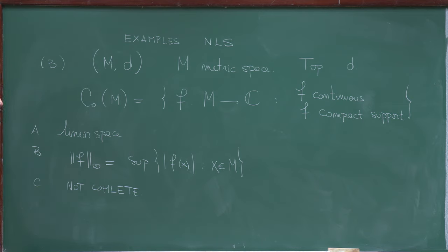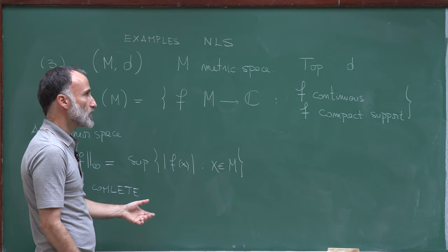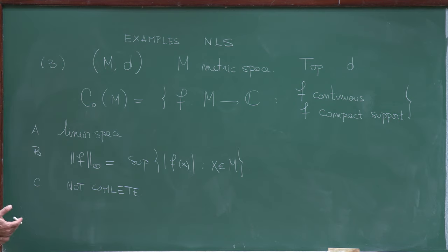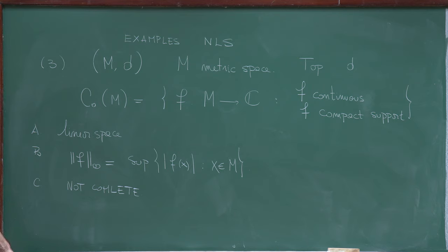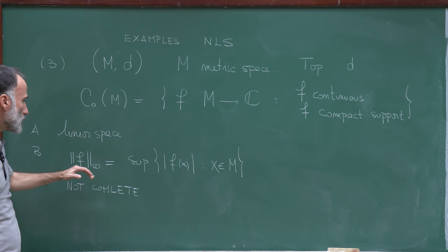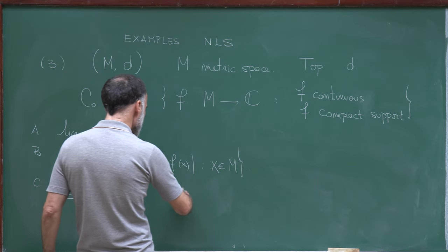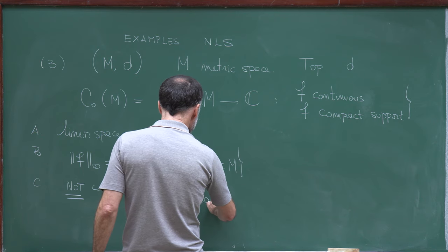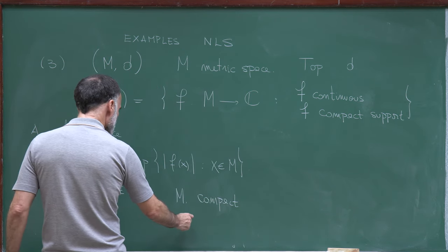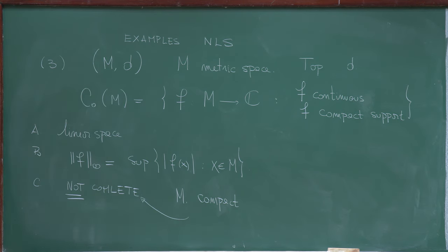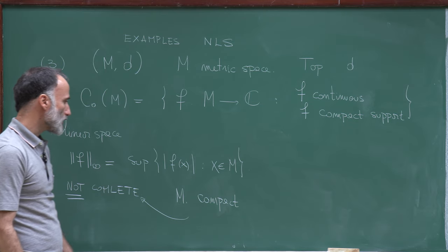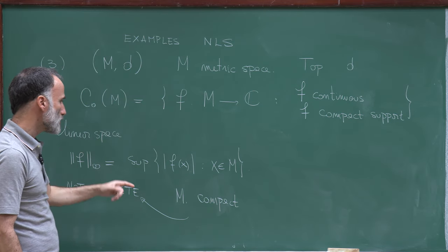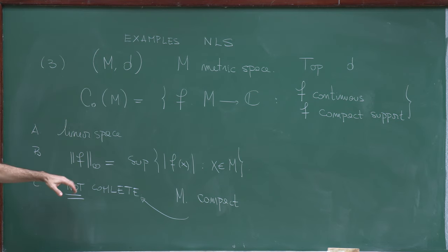Taking M = ℝ, you can easily produce a Cauchy sequence of such functions which does not converge. I leave it to you to find a counterexample showing this space is not complete: find a metric space M, a sequence of continuous functions with compact support which is Cauchy but does not converge for this norm. Of course, if M is compact, then the space is complete. I also leave that as an exercise: suppose M is compact and prove that C₀(M) with this norm is a complete normed linear space.